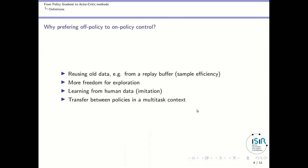So why would we prefer off-policy to on-policy control? The first idea, and this is the one we are using in these lessons, is that if we are off-policy, we can reuse old data that come from a previous version of the policy, for instance from a replay buffer. This improves a lot your sample efficiency because you can reuse the same data several times during training.